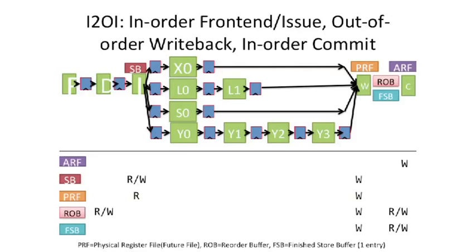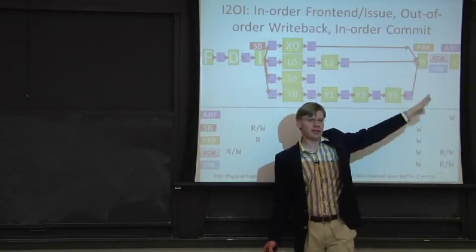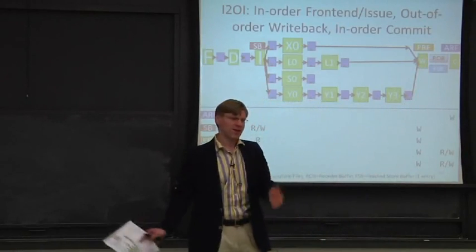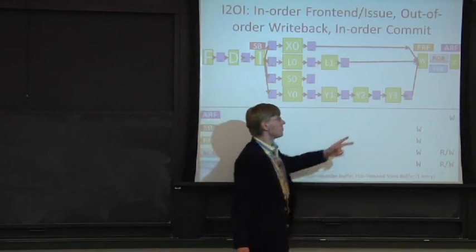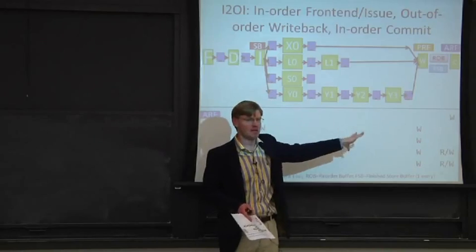We have our architectural register file, which is our committed state to the processor. We added a second register file called a physical register file, or PRF — sometimes called a future file. It's called a future file because it's executing speculatively. Values in it have not been committed and can be thrown out. If an exception occurs or a branch happens, these values are speculative. The architectural register file holds committed state.